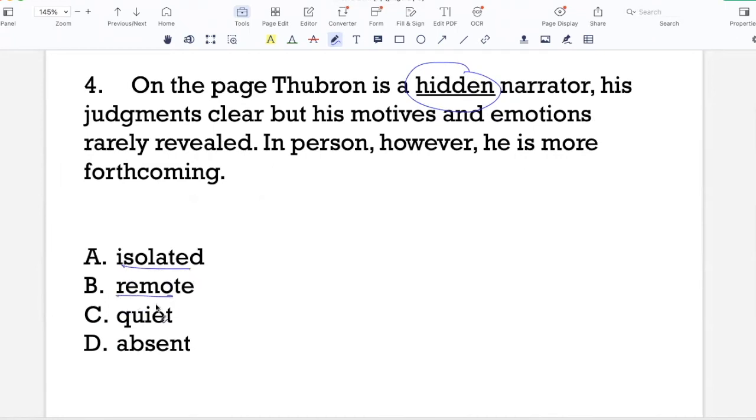So in what way has hidden here been used? Is it isolated, remote, quiet or absent? So I can eliminate A and B easily. I'm not saying that Thubron is an isolated narrator. Isolation would mean that somebody is lonely or somebody is at a place where there is no one else. And that's not how I'm using the word hidden. I'm basically using hidden to mean that he doesn't really bring out his personal emotions on the page. So it's not A. And remote is something that is far away from civilization. So that also doesn't fit the context.